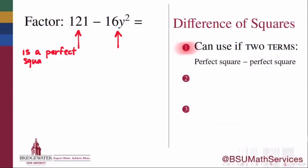121, in this example, is a perfect square because it's equal to 11 times 11.